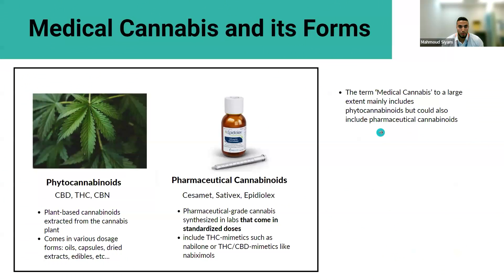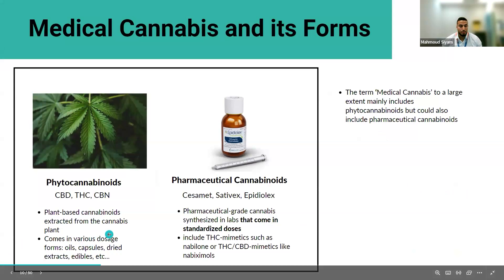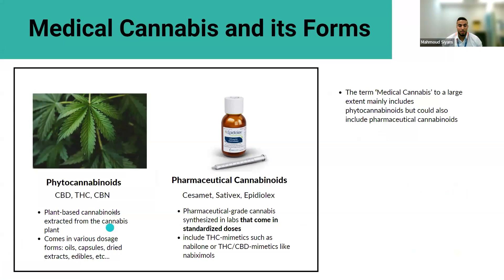Medical cannabis comes in many forms. Phytocannabinoids, or plant-based cannabinoids, are extracted from the cannabis plant and come in various forms such as oils, capsules, and dried extracts. Pharmaceutical cannabinoids are made in pharmaceutical-grade labs under stringent requirements. The difference is that phytocannabinoids come from an unregulated industry, leading to poor quality control, whereas pharmaceutical cannabinoids are regulated, ensuring more consistency in quality control and dosing. When we talk about medical cannabis, we include both.